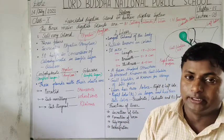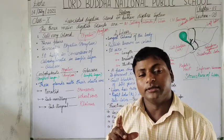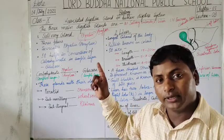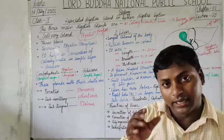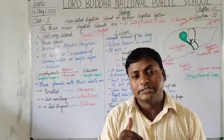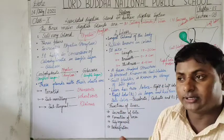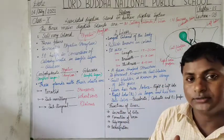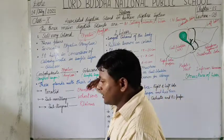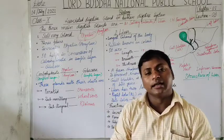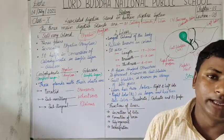Why buccal cavity? Because in the buccal cavity, these three pairs of salivary glands secrete ptyalin enzyme — that means amylase — which converts carbohydrate into simple sugar. You should know these glands are enzyme-secreting glands, or you can say exocrine type of glands.